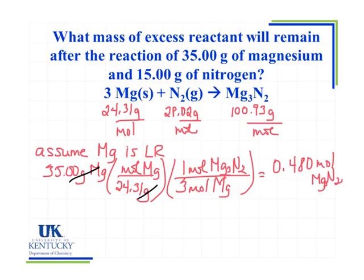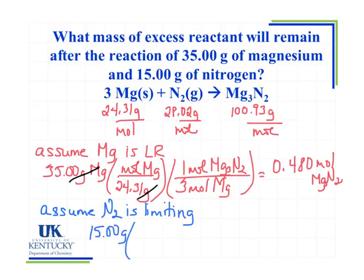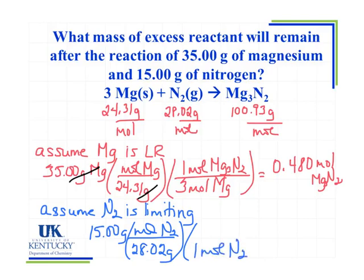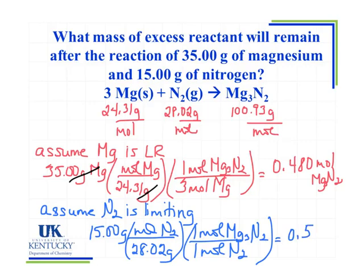Now I'll do a very similar calculation, assuming that nitrogen is limiting. Starting with 15.00 grams of nitrogen, I use the molar mass of 28.02 grams per mole, making sure grams are on the bottom to cancel. For every 1 mole of nitrogen, I produce 1 mole of magnesium nitride. I don't need to convert to grams here since I'm just determining which species is the limiting reagent. So 15 ÷ 28.02 gives me 0.560 moles of magnesium nitride.